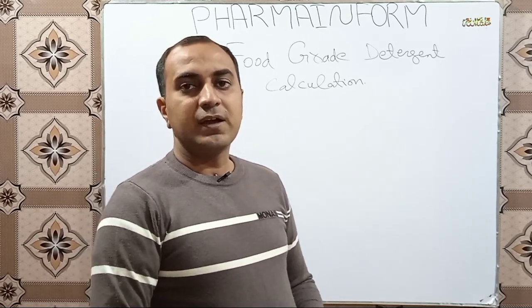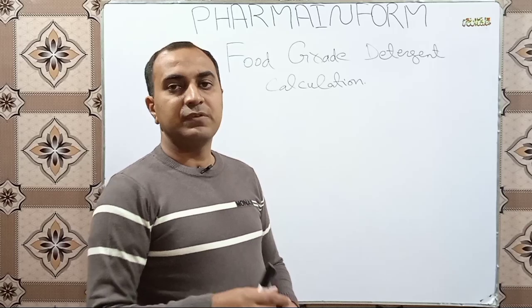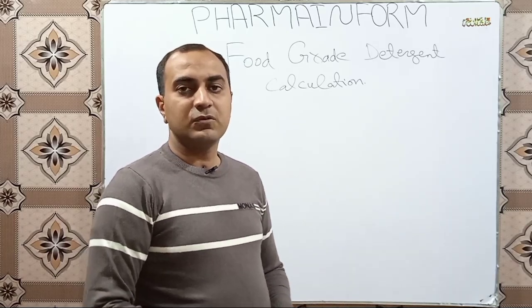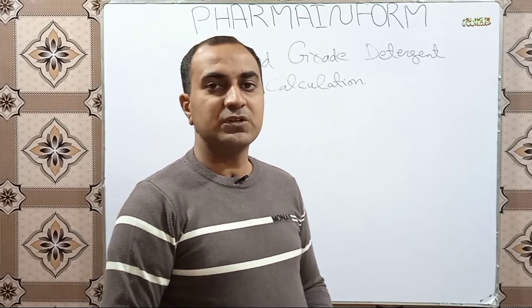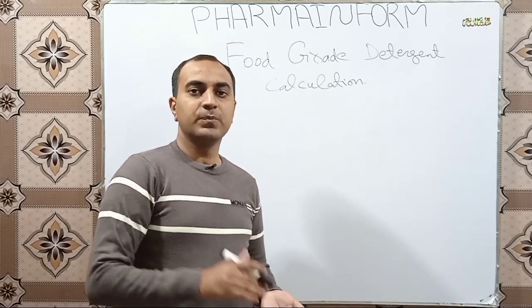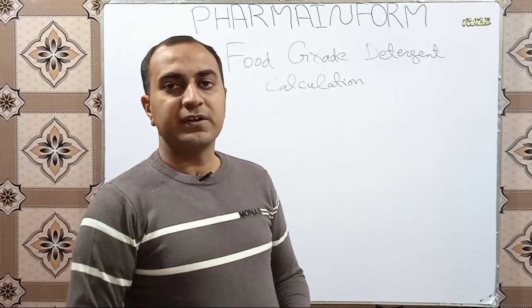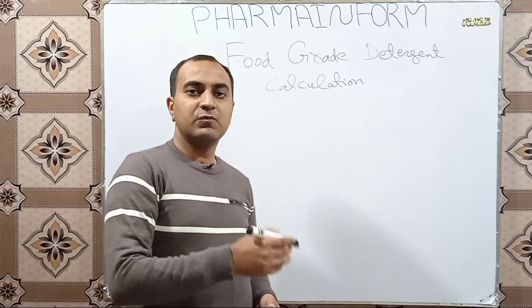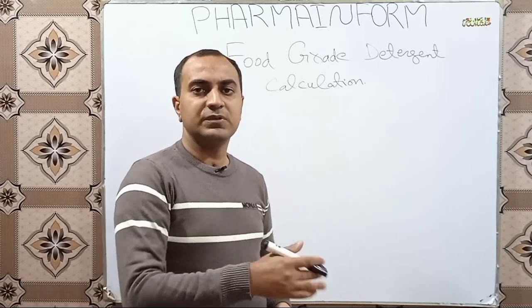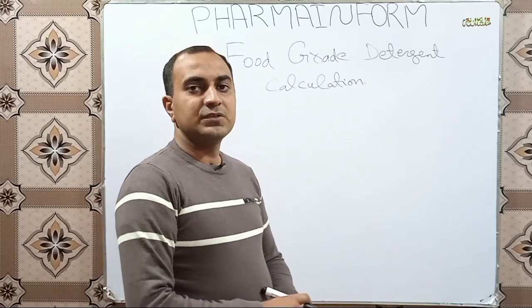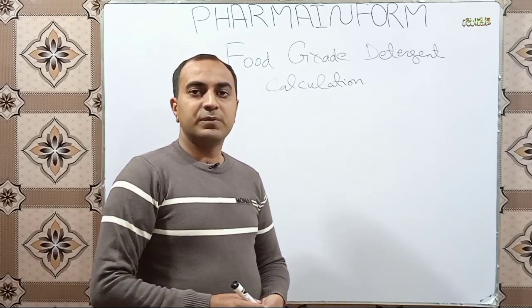Different types of food grade detergents are available in the market with different brand names like Alkonox, Liquinox, and Tergitol. These solutions are used in different concentrations depending upon our standard cleaning procedure. In this video, we will discuss how to prepare a one percent solution of food grade detergent, as this is the most commonly used concentration.